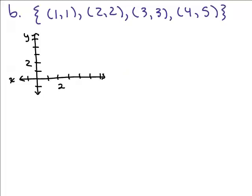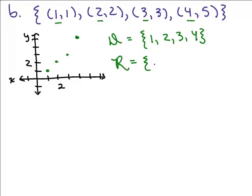Here's the second part. We graph the four ordered pairs: (1,1), (2,2), (3,3), and (4,5). The domain is just the x coordinates: 1, 2, 3, and 4. The range is the y coordinates: 1, 2, 3, and 5. Is this a function? All of the x coordinates are different, and it passes the vertical line test — a vertical line never goes through two or more ordered pairs — so this is a function.